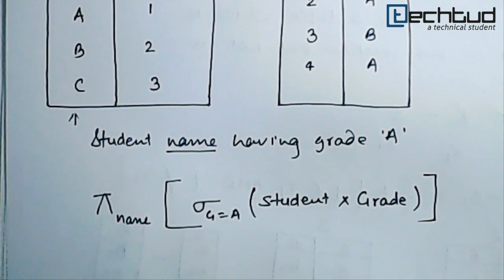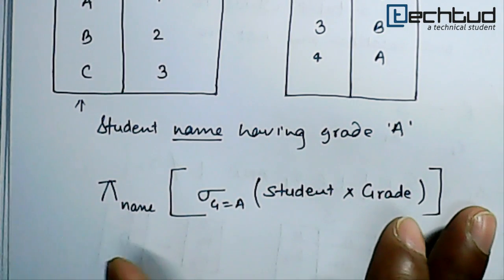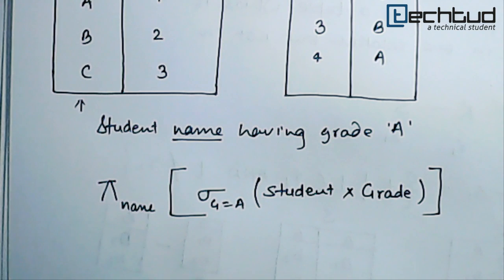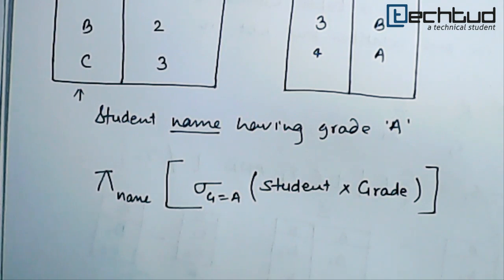So that's how the cross product is used in our relational algebra and this is how it runs internally in the system, in any SQL system. So I hope this is clear, thanks for watching.